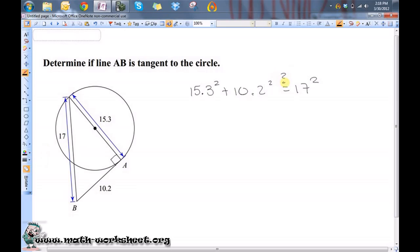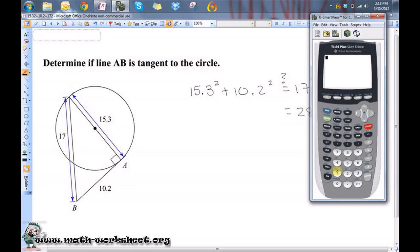We're checking to see if this works. 17 squared is 289, but let's find out what 15.3 squared plus 10.2 squared is.